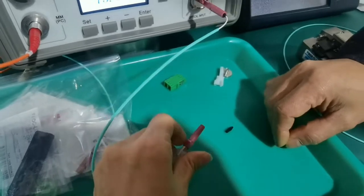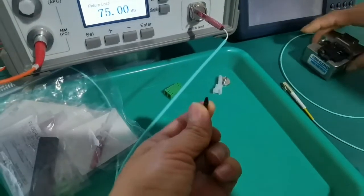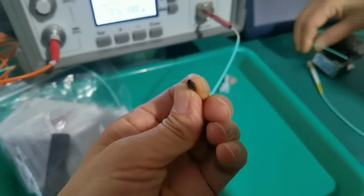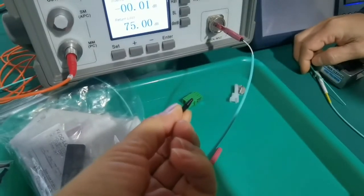You can see the boot. We can also use the 0.9mm buffered tube for pigtails. This is the boot for 0.9mm tube.